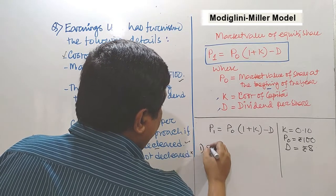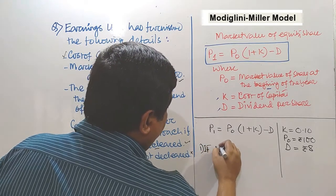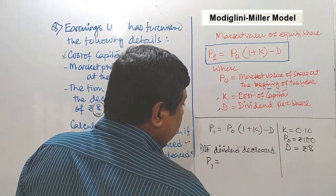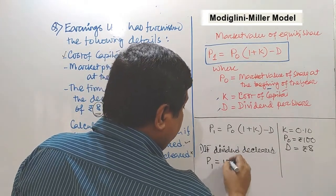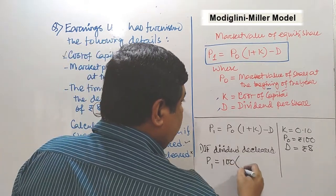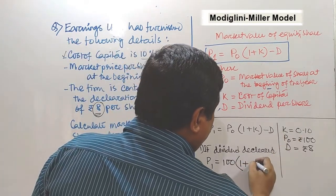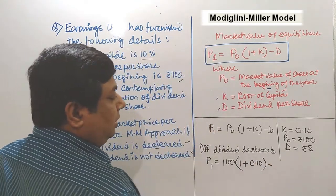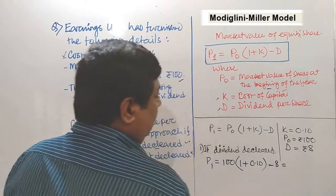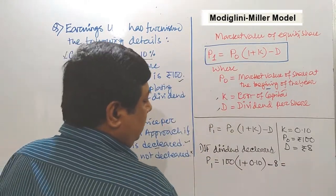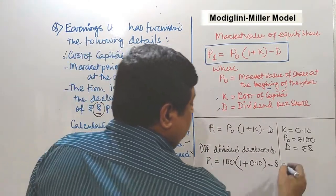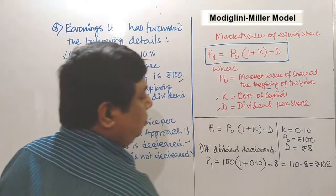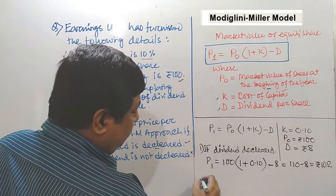Option one — if dividend is declared: P1 equals P0, that is 100, multiplied by (1 plus K, which is 0.10), minus D, which is Rs.8. Calculating: 100 × 1.10 = 110, then 110 minus 8 gives us Rs.102.